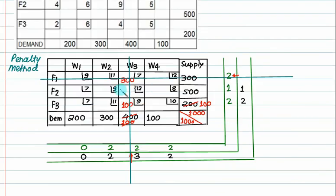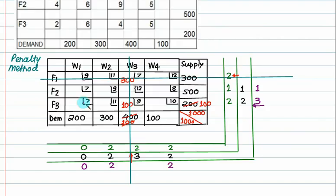New penalties: row with 7, 9, 8 gives 1; row with 7, 11, 10 gives 3 (7 and 10). Column penalties: 7 and 7 = 0, 9 and 11 = 2, 8 and 10 = 2. Maximum penalty is 3 in that row. Minimum cost in that row is 7; we can only allocate 100. This row is now cancelled, 100 left.